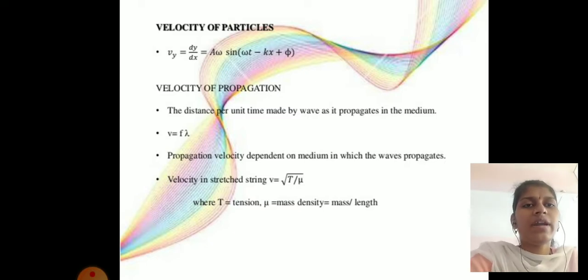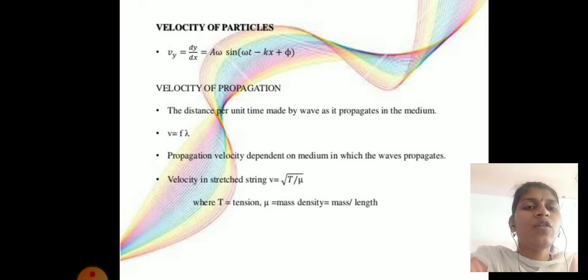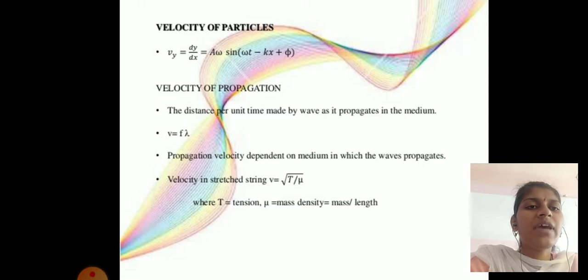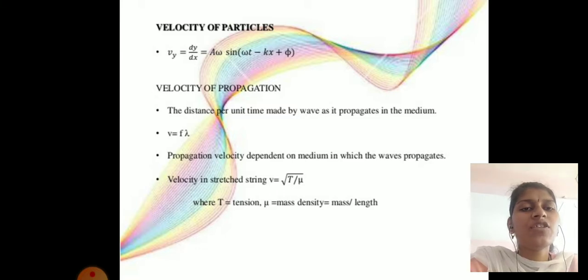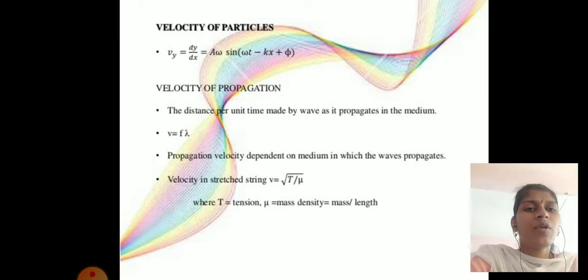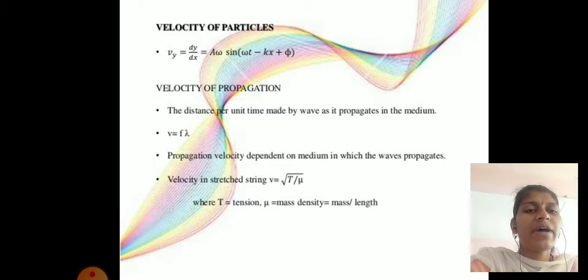Next is velocity of a particle: v_y = dy/dt = Aω cos(ωt − kx + φ). The velocity of propagation is the distance per unit time made by the wave as it propagates: v = fλ. For a stretched string, v = √(T/μ), where T is tension and μ is mass per unit length.